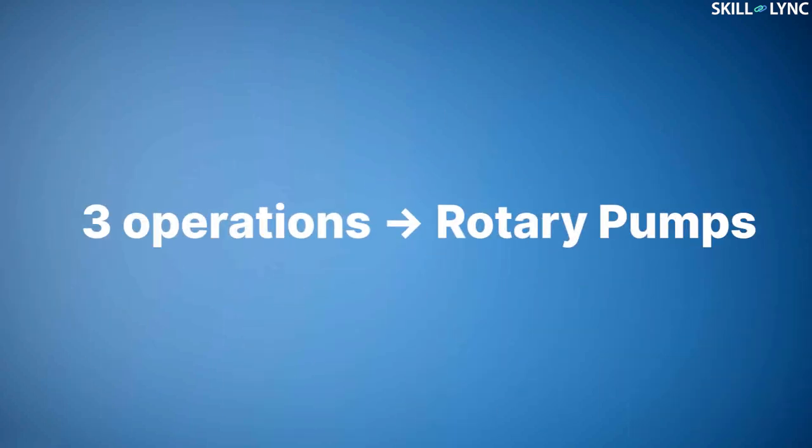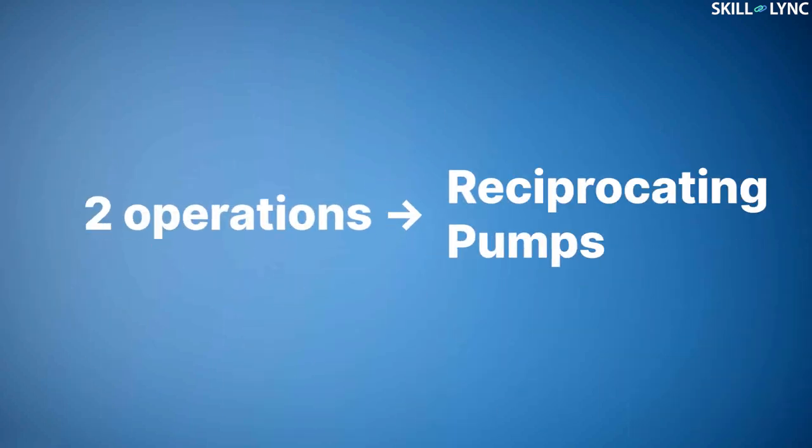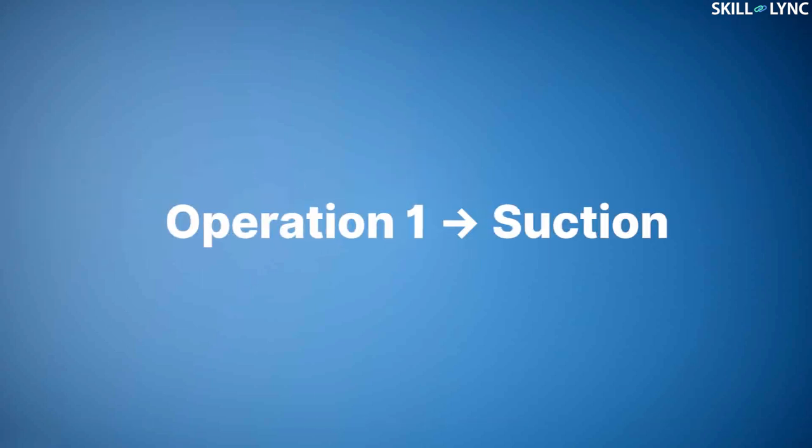All rotary pumps have three major operations unlike the two of the reciprocating pumps. The first operation is the suction operation. Here, the fluid is sucked into the pump from the pipe or reservoir.